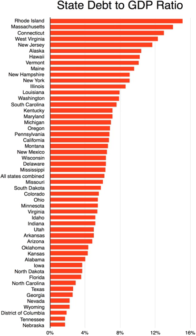Although the exact position of each component may vary, there are certain components common to most state governments. Education is one of the largest areas of spending by state governments, including K-12 education as well as state university systems. Health care is also one of the largest areas of spending by state governments, including spending on Medicaid and the Children's Health Insurance Program.